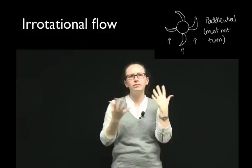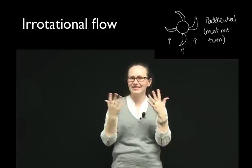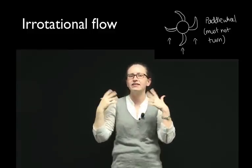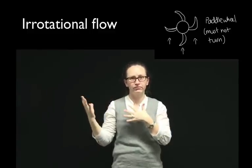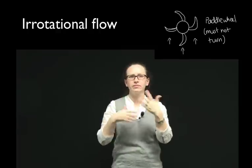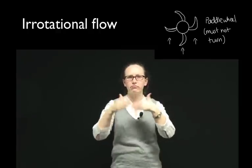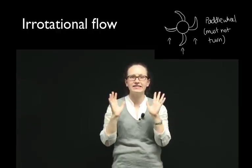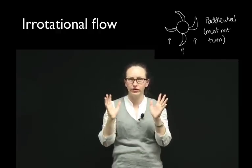So whirlpools and things like that would mean that we had non-irrotational flow, and so we're assuming that we don't have whirlpools in our ideal fluid flow.